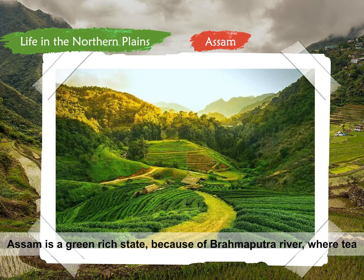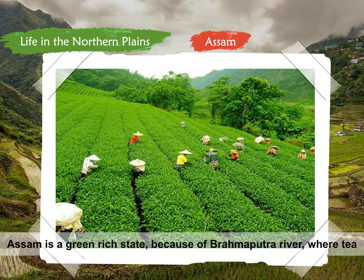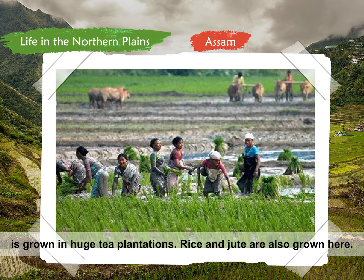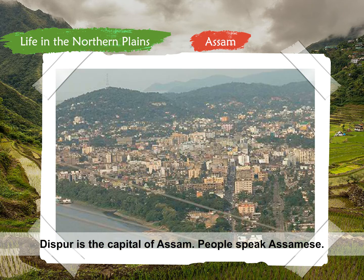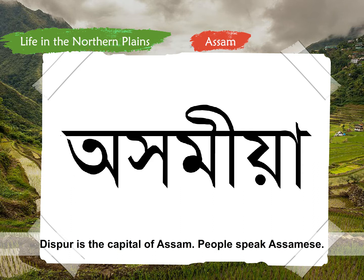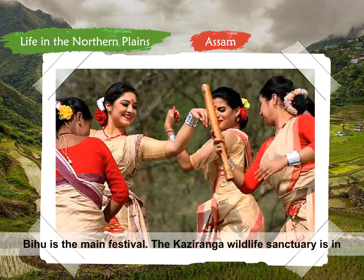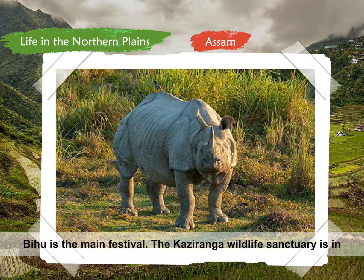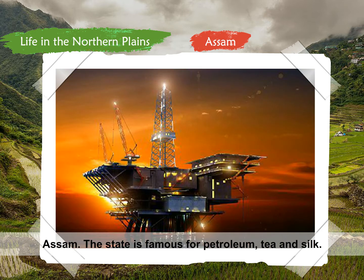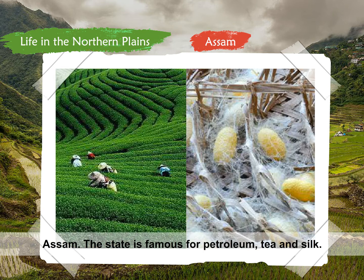Assam is a green-rich state because of the Brahmaputra River, where tea is grown in huge tea plantations. Rice and jute are also grown here. Dispur is the capital of Assam. People speak Assamese. Bihu is the main festival. The Kaziranga Wildlife Sanctuary is in Assam. The state is famous for petroleum, tea, and silk.